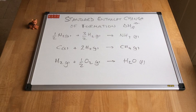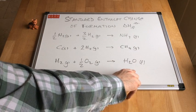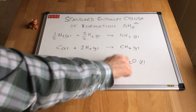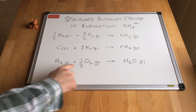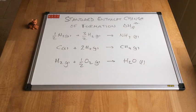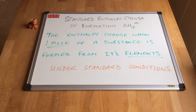So some clues: how much substance has been formed? One mole in each of these equations — we formed one mole of a substance. And what have we formed these substances from? They are all elements. So the definition is: the enthalpy change when one mole of a substance is formed from its elements under standard conditions.